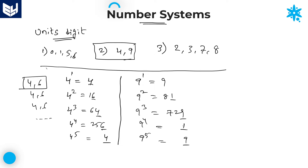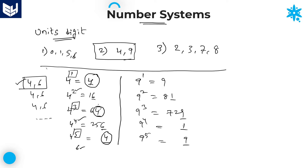If any number is ending with 4, whatever the power value, the units place digit is either 4 or 6. The point is: when are you getting 4 and when are you getting 6? If you observe carefully, when the power values are 1, 3, 5 — odd numbers — the units place digit is 4. When the power values are 2, 4, 6 — even numbers — the units place digits are 6.